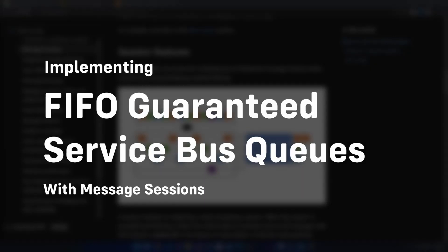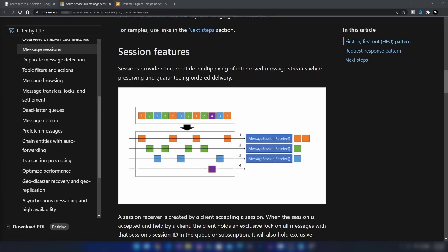In this video we are going to learn how to ensure first-in first-out message delivery with Azure Service Bus queues, using a feature called sessions. When you work with sessions, you need to assign a session ID to each of your messages, and you will be given a first-in first-out guarantee for messages that have the same session ID.